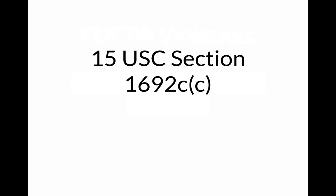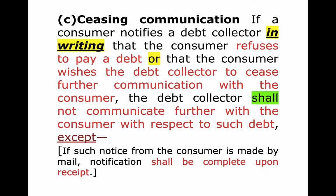The part of the law that we're looking at is 1692C, subpart C. What I have on the screen here is what you as the consumer do, and on the next screen we'll have what the debt collector is allowed to do even after getting a cease and desist letter.